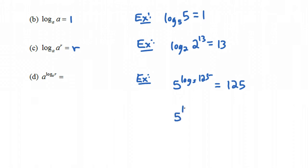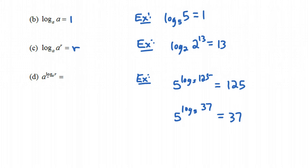Let's do another example: 5 to the log base 5 of 37. That one's not so clear — log base 5 of 37 is going to be some crazy decimal, 2 point something. But what does that number really mean? It means it's the power you need to raise 5 to in order to get 37. So if you raise 5 to that power, you get 37. In general, log base a of r is the power you need to raise a to in order to get r, so a to that power gives you r. This last property might be a little confusing, but definitely try to remember properties C and D.